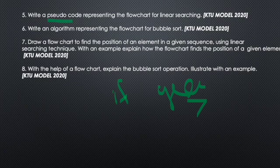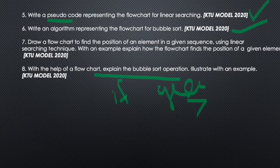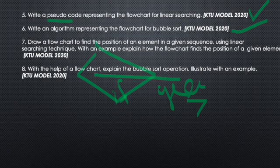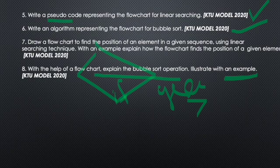The next question is the algorithm representing the flowchart of bubble sort. We will be aware of the two questions. The next question is the help of a flowchart — explore the bubble sort operation. We will edit the algorithm in the bubble sort operation using the flowchart. We will see the symbols and check the condition statements.